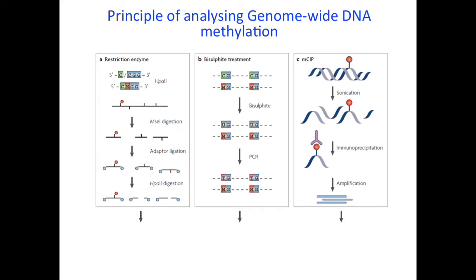The second method is bisulfite treatment, and by far this is the most commonly used method to distinguish methylated and unmethylated cytosine. The basic idea is that by a chemical treatment — sodium bisulfite treatment — unmethylated cytosine is changed into uracil, and after PCR you see them as T. However, methylated cytosine is resistant to this treatment and remains unchanged. So if you see a C at the end you know it was methylated, and if it became a T it was unmethylated. This gives a base-resolution way to distinguish methylated and unmethylated cytosine.